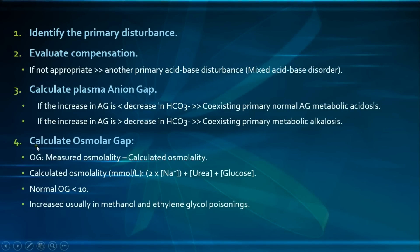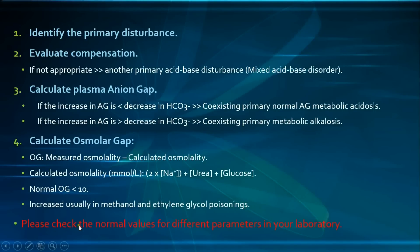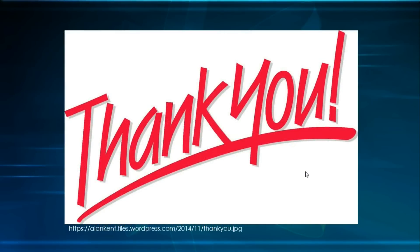The last step is to look at the osmolar gap, which is the measured osmolality minus the calculated osmolality. Calculated osmolality uses plasma concentrations of sodium, urea, and glucose. Normally the osmolar gap is less than 10, and it is particularly useful in managing methanol and ethylene glycol poisonings. Always check normal values for pH, bicarbonate, pCO2, osmolar gap, and anion gap in your own laboratory, as normal ranges differ between labs. This concludes our series on electrolyte abnormalities and acid-base disturbances.